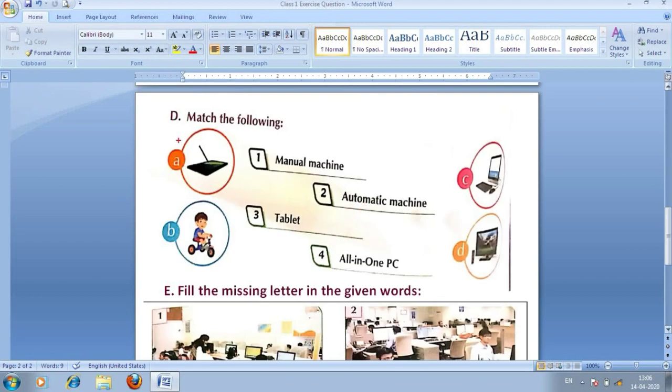Next, let's see. D number section, what's saying? Match the following. It means babu, kuch yahaan pe devices diye gaye hai, inko match karna hai. So, let's see. One number, manual machine. Jo hojaye ga, babu, woh hamara manual machine B mein aa ga.